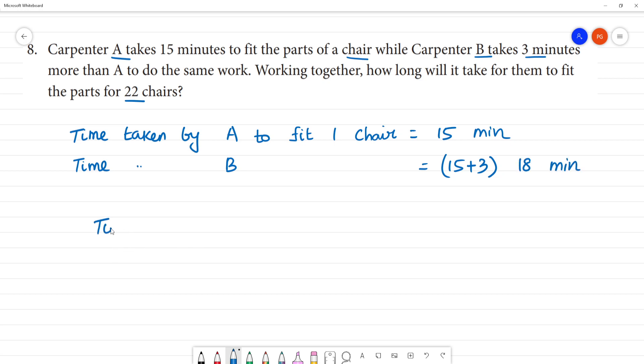Together, time taken to fit 1 chair: A plus B equals AB divided by A plus B.